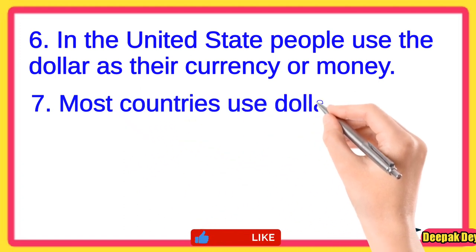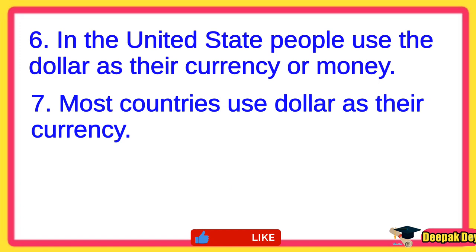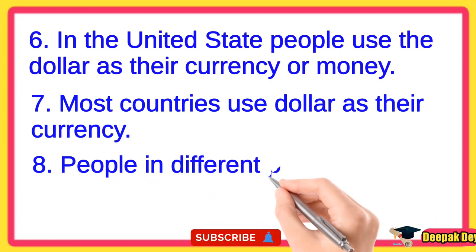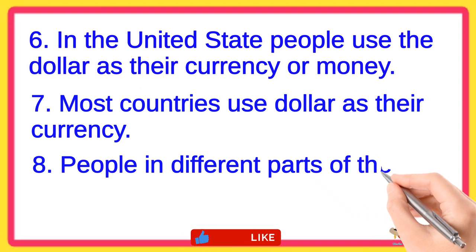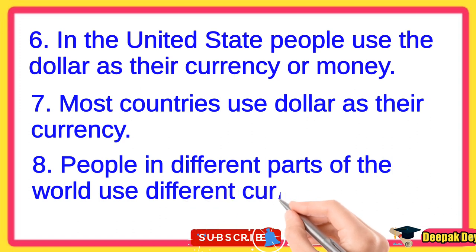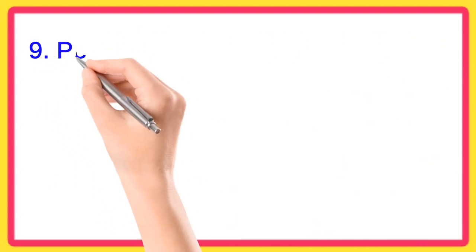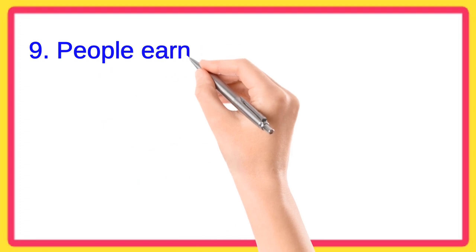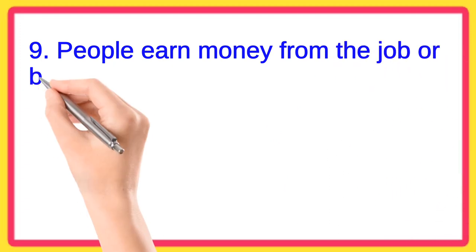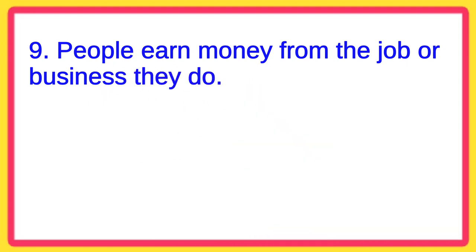Line 7: Most countries use the dollar as their currency. Line 8: People in different parts of the world use different currency. Line 9: People earn money from the job or business they do.